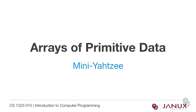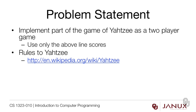Let's continue our study of arrays of primitive data by designing a program to play Yahtzee. Here's the problem statement: implement part of the game of Yahtzee, which is a two-player game. Use only the above-line scores. You need to be familiar with the rules of Yahtzee to do this — if you haven't played before, go to Wikipedia and read about the rules.